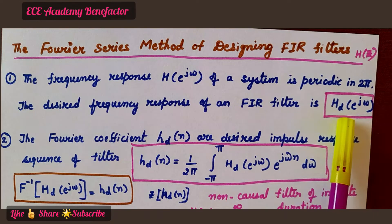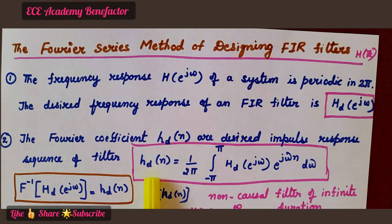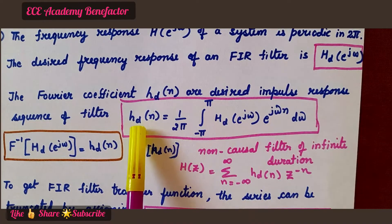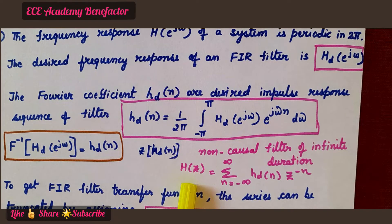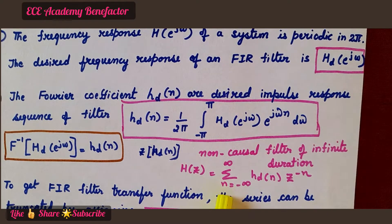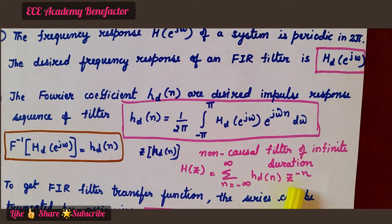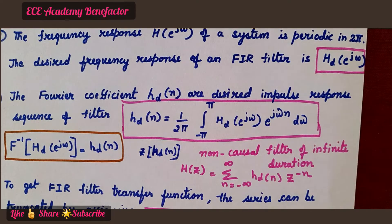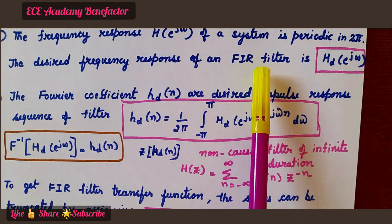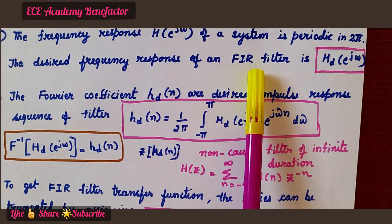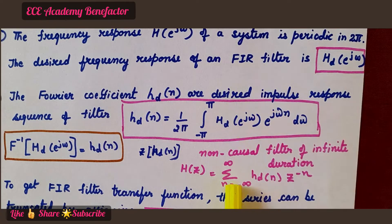Based on the desired frequency response we compute the Fourier coefficient, and the Z-transform of this Fourier coefficient gives H of Z. The formula for H of Z is the summation from n equals minus infinity to infinity of H_d of n times z to the power minus n. However, this is a non-causal filter of infinite duration. Our target is to design an FIR filter — FIR stands for finite impulse response — so its impulse response must be finite, but this gives an infinite result.